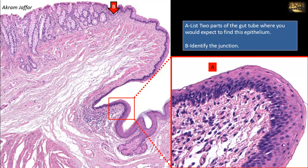List two parts of the gut tube where you would expect to find this kind of epithelium, and identify junction B. The epithelium in the magnified inset A is stratified squamous epithelium, non-keratinizing — multiple layers of cells with squamous superficial layers, though the deeper layers are polyhedral or tall cuboidal. This protective epithelium is found in the oral cavity, pharynx, esophagus, and anal canal. At junction B, there is an abrupt transition of epithelium.